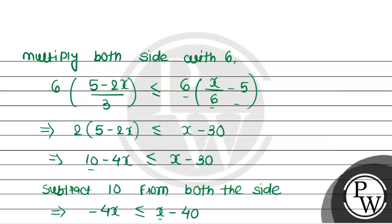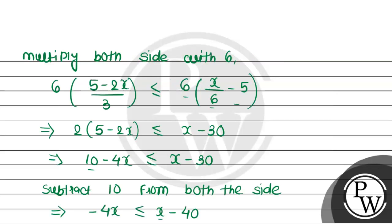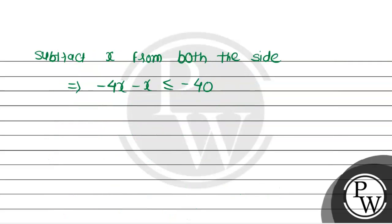Again, subtract x from both the sides. So minus 4x minus x less than or equal to minus 40. The x terms cancel out when we subtract.